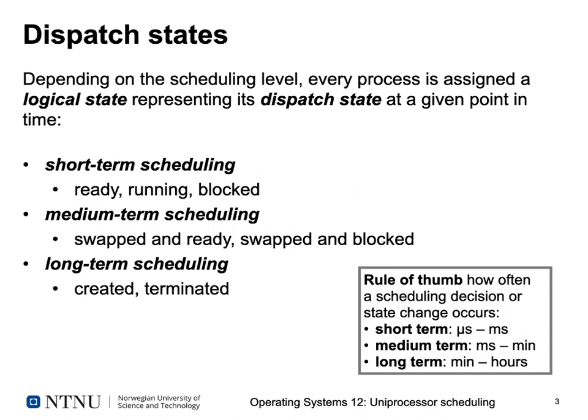Long-term scheduling involves process creation and termination. As a rule of thumb, short-time scheduling occurs in the range of microseconds to milliseconds; medium-term scheduling in milliseconds to seconds or even minutes; and long-term scheduling could involve minutes to hours. In some server systems, processes are started when the system starts and only stopped when the system shuts down — a web server can run for days or even months.